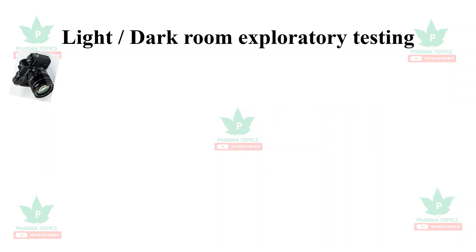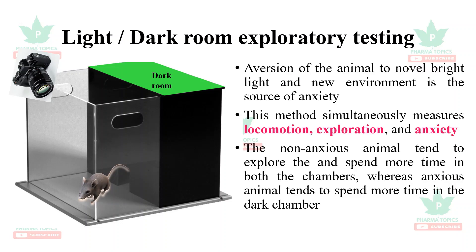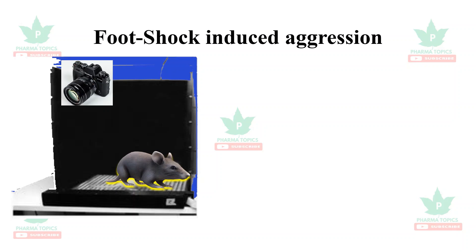The light and dark room exploratory test includes two chambers: a dark room and a light room. The animal's aversion to novel bright light and new environment is the source of anxiety in this model. This method simultaneously measures locomotion, exploration, and anxiety. Non-anxious animals tend to explore and spend more time in both chambers, whereas anxious animals tend to spend more time in the dark chamber.